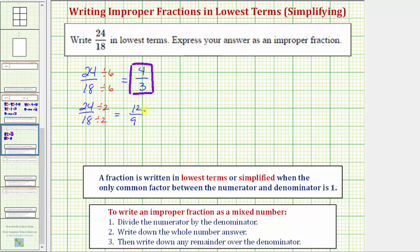But 12 and nine still share a common factor of three, and therefore 12 ninths is not in lowest terms. So now we have to divide the numerator and denominator by three. Notice how now the fraction will be in lowest terms. 12 divided by three is four, and nine divided by three is three.